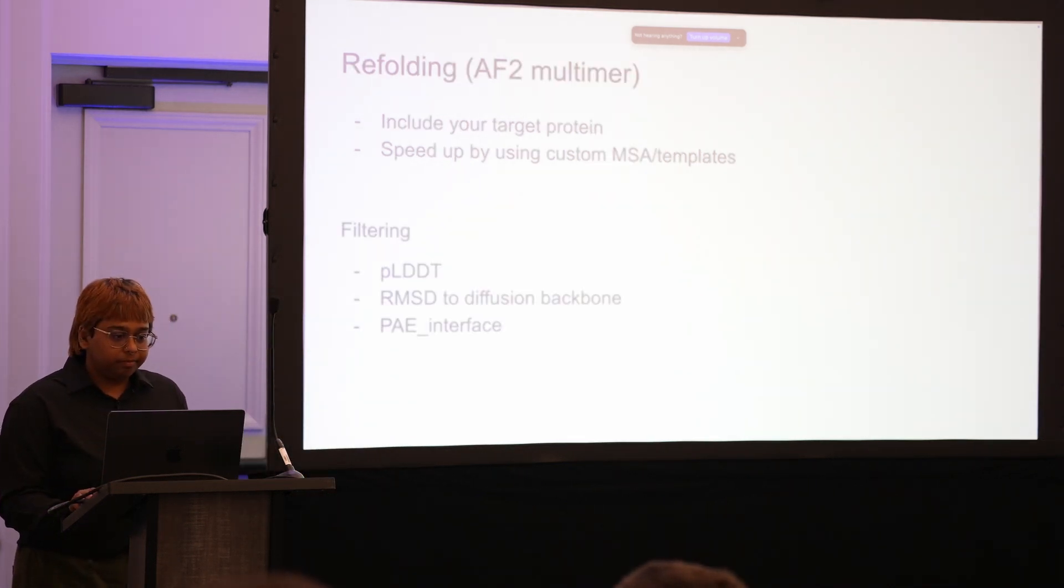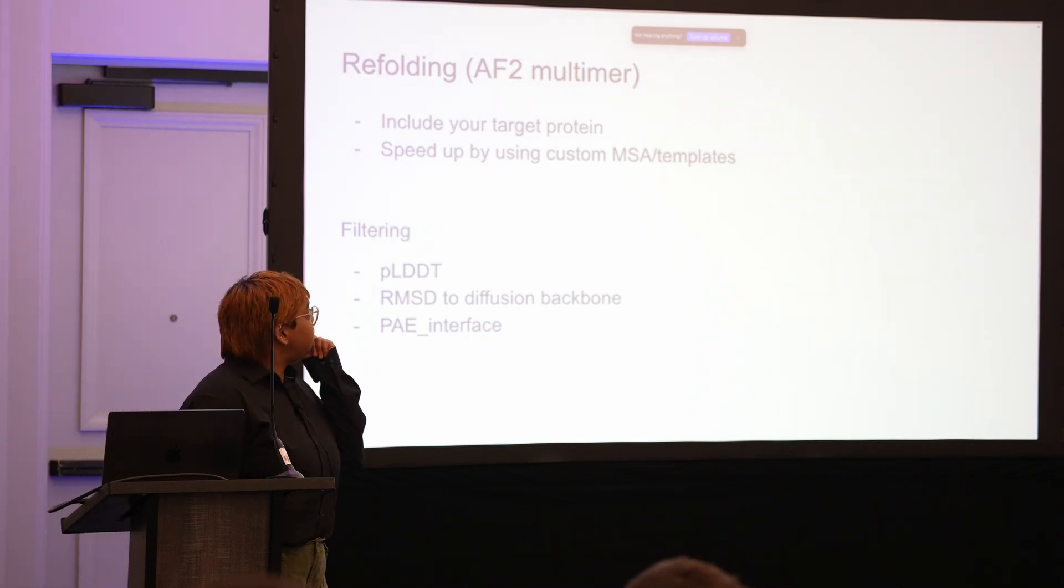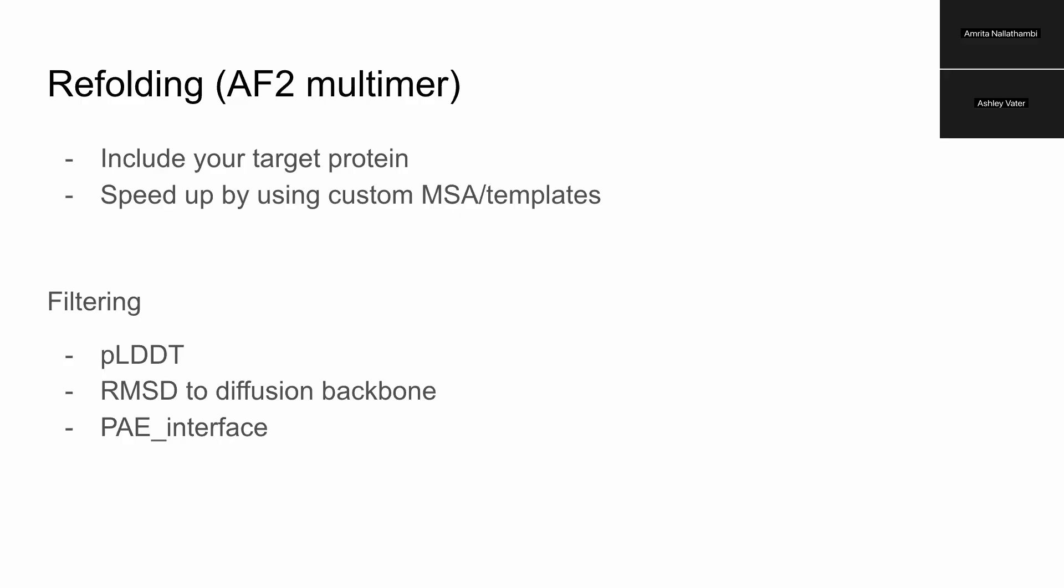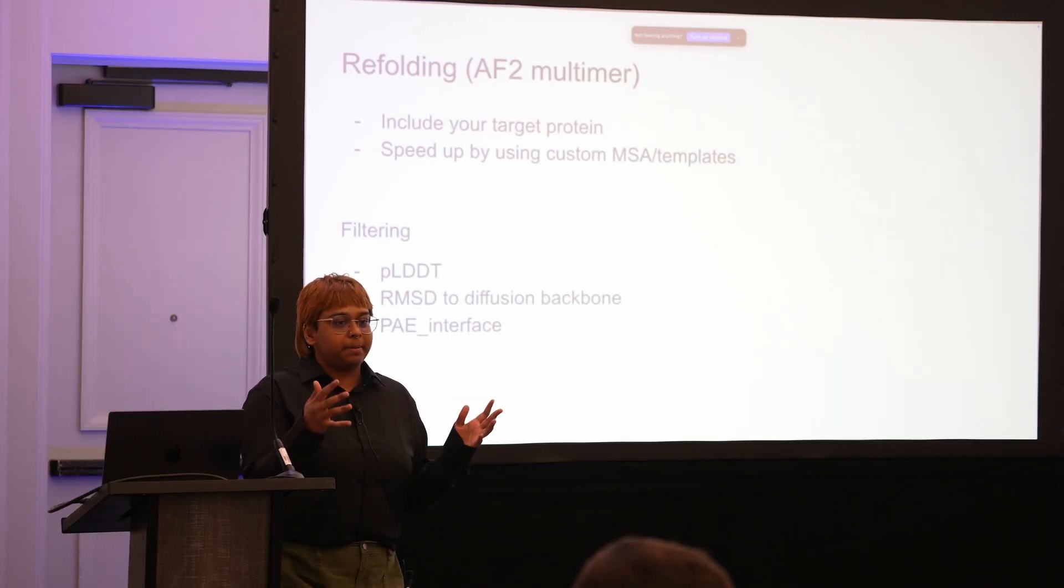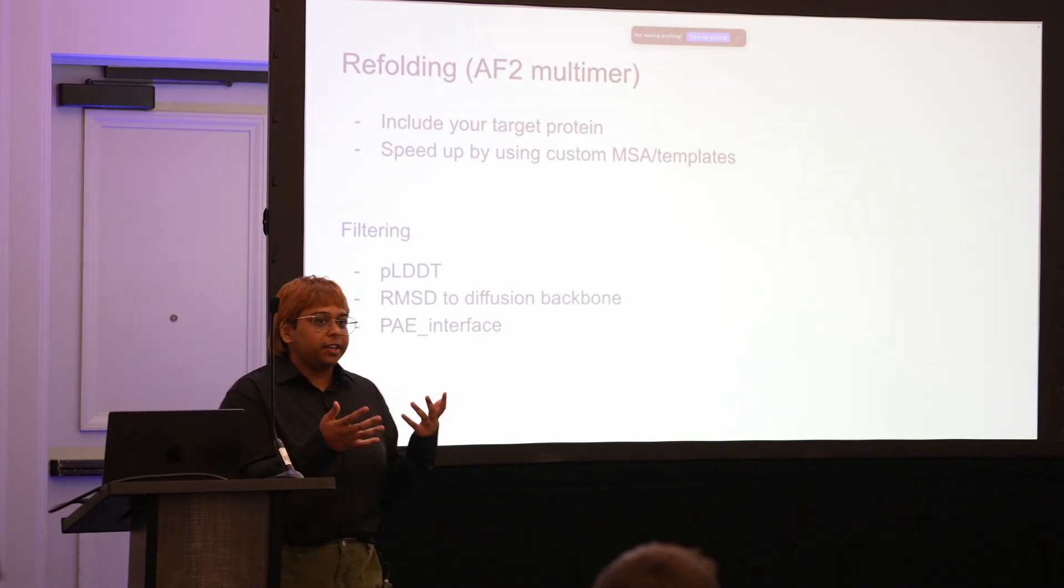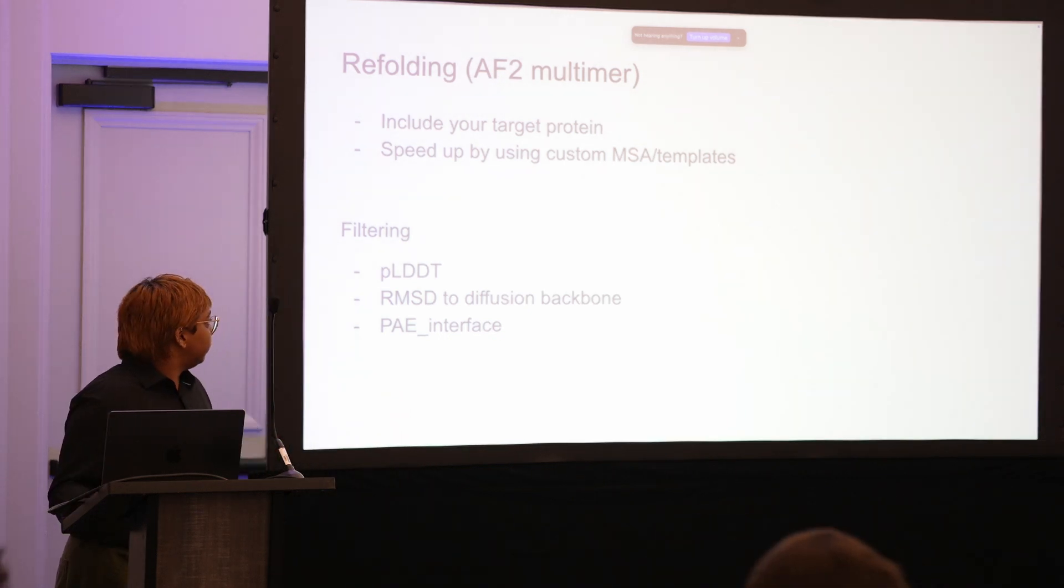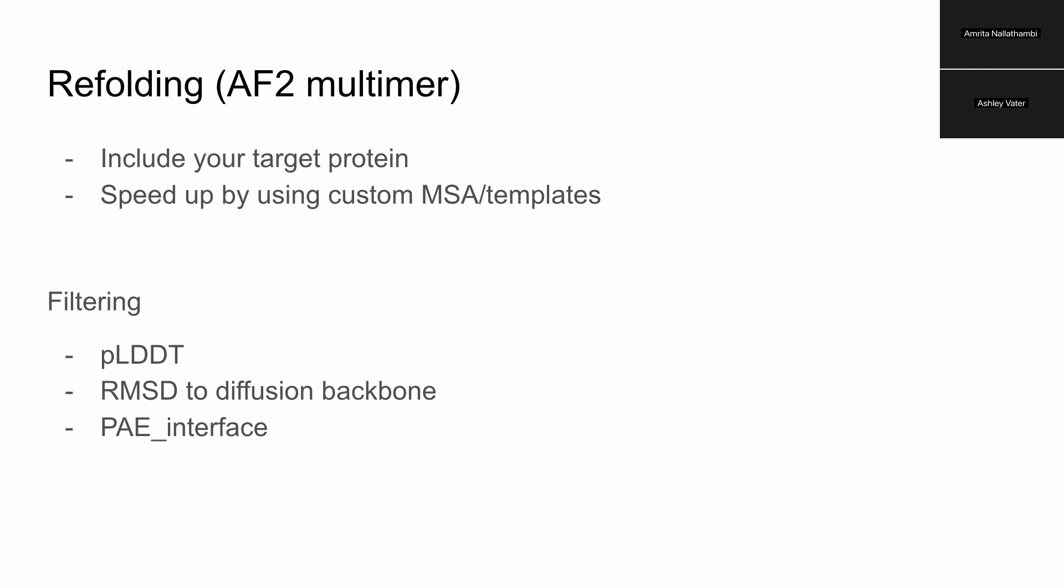For the refolding step you want to include most of your target protein here. You can speed up the high throughput AlphaFold predictions by running AlphaFold on your target protein before you do this step and figuring out what the minimal set of inputs you need to get the target protein folded is. You can generate an MSA, figure out if you give it two templates will it fold the target protein correctly, and then when you're going into the high throughput step you want to use just those minimal inputs so you can automate that process faster.